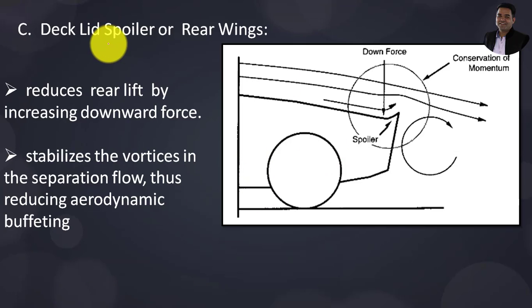Next, deck lid spoilers or rear wings. Deck lid spoilers are aerodynamic surfaces you can observe at the rear end of the vehicle. It will look like this.